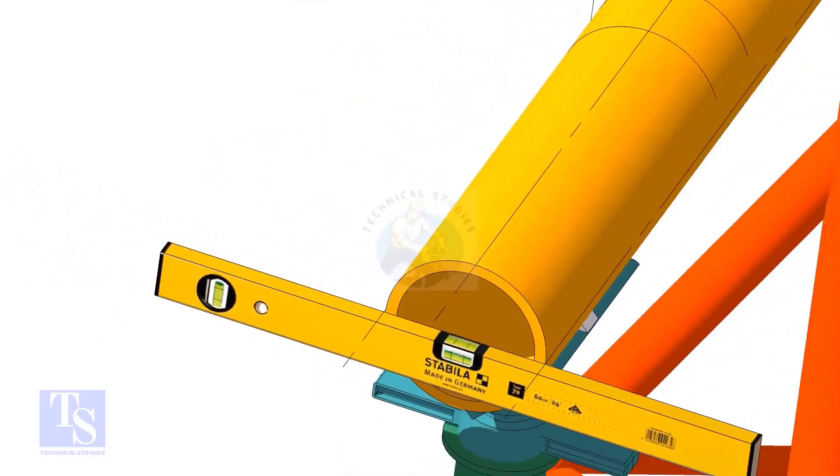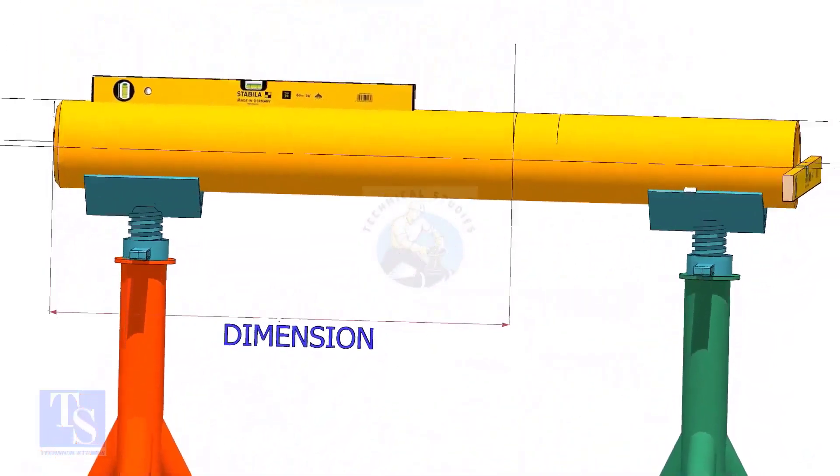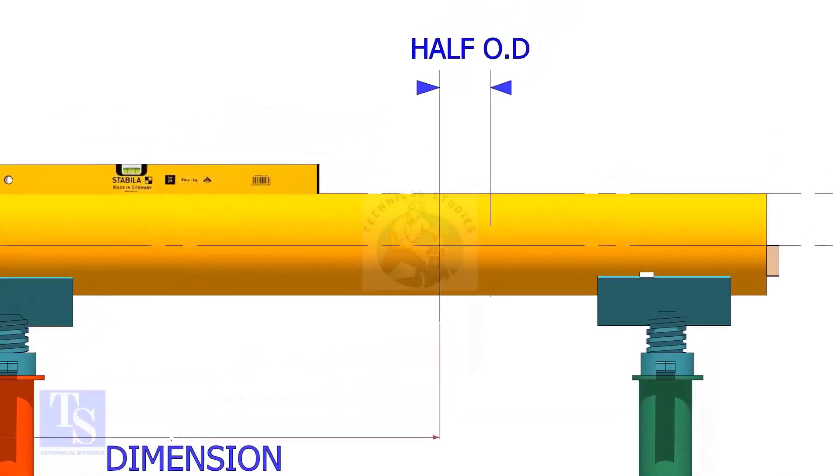Mark the center of the laterolette, as per the drawing. Mark half OD of the header in the direction of the laterolette on the top of the pipe. This line is actually for inspection purposes only.